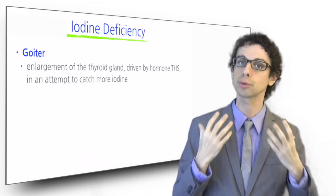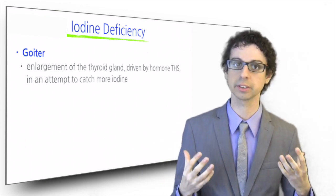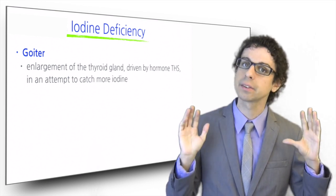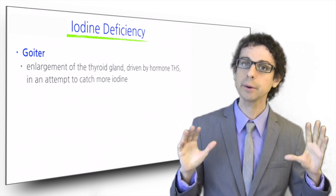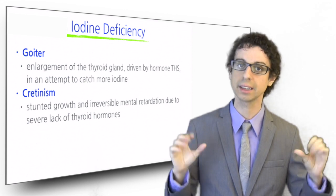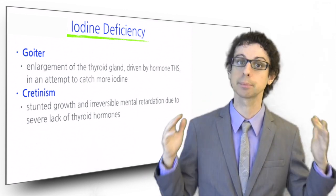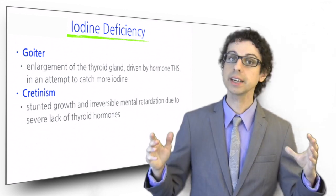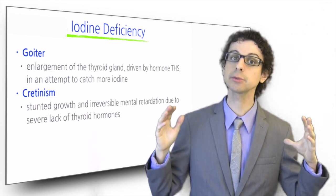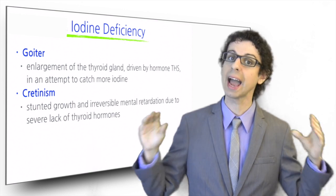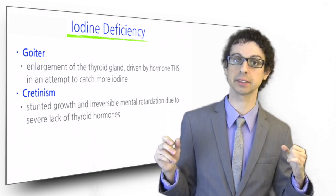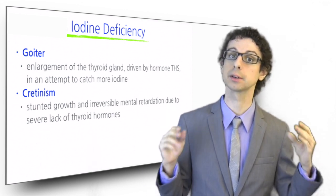If goiter is the most striking consequence of iodine deficiency, there are many others that are far more sinister. Thyroid hormones are needed for growth and development of all parts of the body, including the brain and the myelin sheath that protects our nerves. Iodine deficiency in infants can thus result in stunted growth and irreversible mental retardation, a condition known as cretinism.